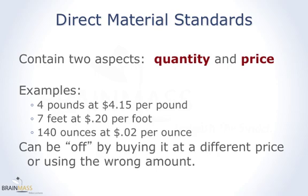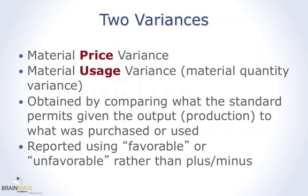We can be off from the standard by buying it at a different price, by using the wrong amount, or both. We're going to study the material price variance and the material usage variance. Some books call the material usage variance the material quantity variance — they're interchangeable. We obtain these variances by comparing what the standard permits to what actually happened: what did we buy, how much did we use — we compare to the standard.